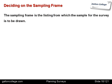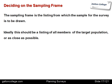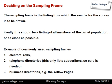Now, deciding on the sampling frame. The sampling frame is the listing from which the sample for the survey is to be drawn. Ideally, this should be a listing of all members of the target population, or as close as possible. Examples of commonly used sampling frames include electoral rolls, which give an indication of people entitled to vote in the country, and telephone directories — though care is needed as many people don't have a listing on the telephone directory, so it's not exactly a good source.